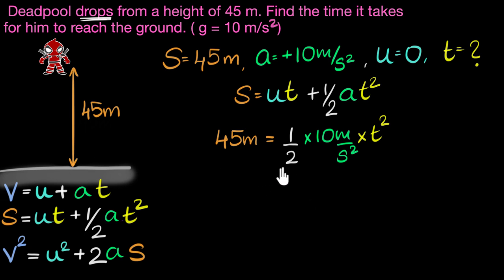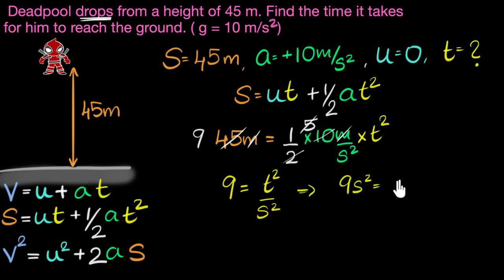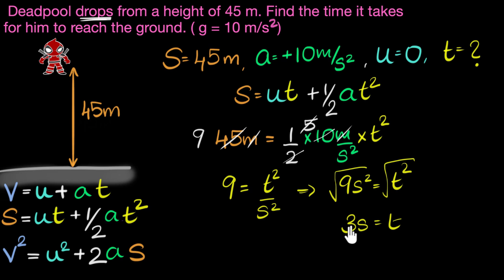Let's simplify. Two goes into 10 five times, and a meter cancels, and five goes into 45 nine times. So we have 9 on the left-hand side and T squared divided by seconds squared on the right-hand side. Multiplying both sides by seconds squared gives us 9 seconds squared equals T squared. Taking the square root on both sides: square root of 9 is 3, so T equals 3 seconds.